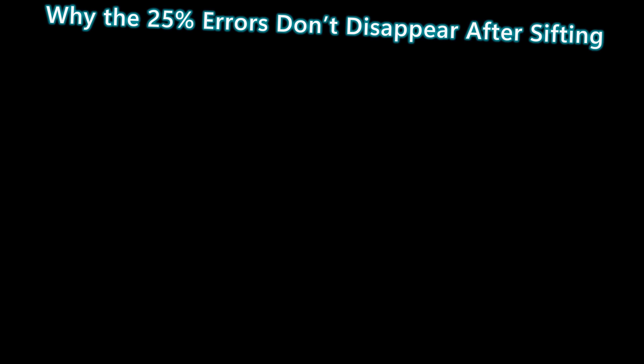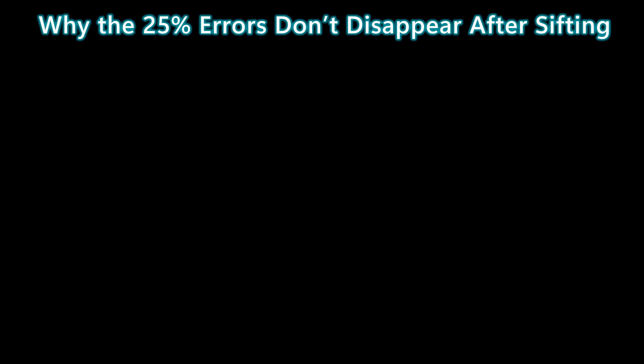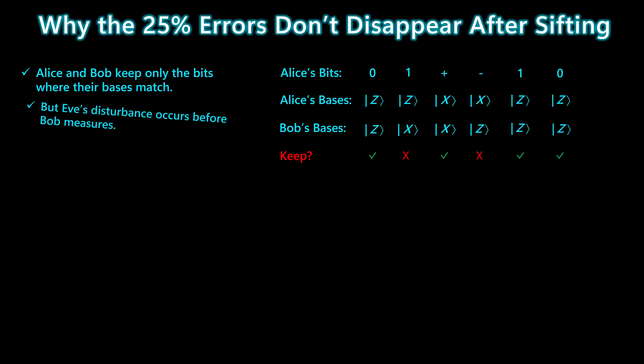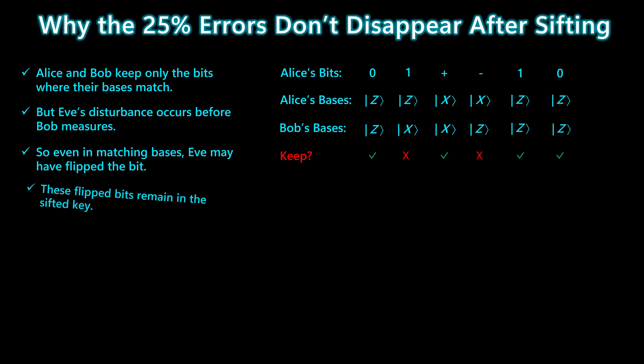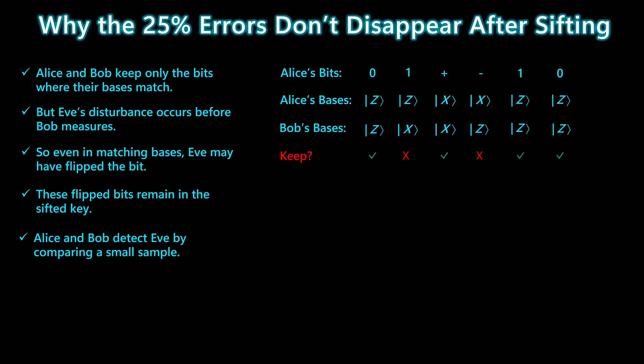When Alice and Bob perform sifting, they only keep the bits where they use the same basis. You might think this removes Eve's disturbance, but it doesn't. Eve's errors are introduced before Bob makes his measurement. So even in the bits that survive sifting, some outcomes are still wrong. These errors show up directly in the sifted key, and this is what allows Alice and Bob to detect the intercept-resend attack.